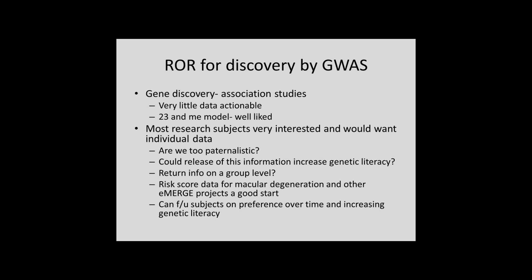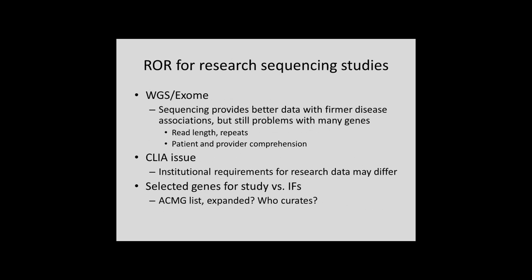Next, sequencing studies. There's a misperception among providers that whole genome sequencing gets you the whole genome sequence — and it really doesn't. There's obviously some education needed there. For rare variants there are much firmer disease associations, but there are a lot of problems. And there's the CLIA issue. To the extent that we can do tests in a CLIA lab, as Mark mentioned, this is durable information we could use forever. My guess is that the list of 56 genes will be expanding over time, and we may have institutional differences, but who curates and how do we do it?